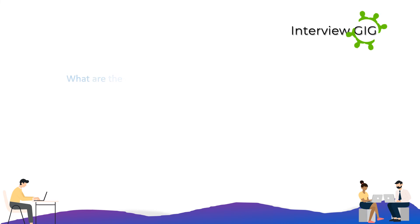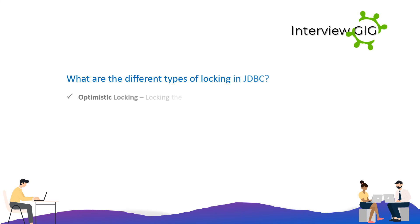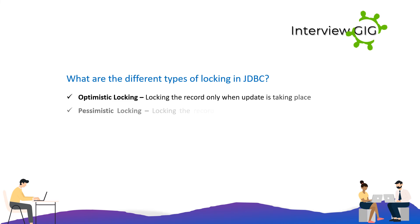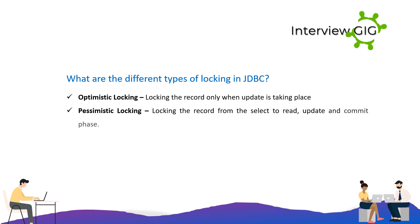What are the different types of locking in JDBC? Optimistic locking: locking the record only when an update is taking place. Pessimistic locking: locking the record from the SELECT to read, update, and commit phase.